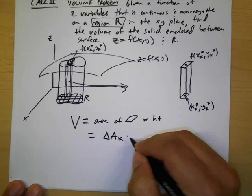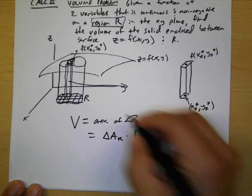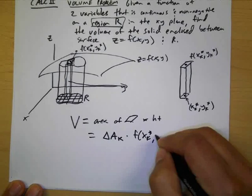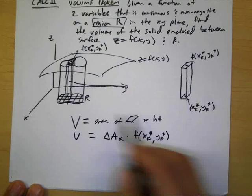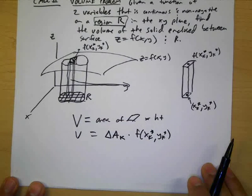And if I multiply that area with the height which is going to correspond to f of x sub k star and y sub k star that will represent the volume of each one.